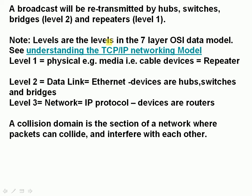These levels are the levels in the 7-layer OSI model. Level 1 stands for physical — it is the media, the cable or the wireless — and the repeater is a device that operates at that level. Level 2 is called the data link, and it is Ethernet — Ethernet is a data link protocol, and devices at that level are hubs, switches, and bridges. A level 3 device is a router, and for that we need a networking protocol, which is the IP protocol.